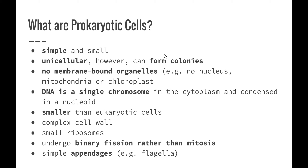They have a complex cell wall. They contain small ribosomes which, as we know, are able to undergo protein synthesis. The cells themselves undergo binary fission rather than mitosis — binary fission is a process of asexual reproduction where we produce two identical cells from one cell, but it's a slightly different process than mitosis. And our prokaryotic cells have simple appendages; in particular, a lot of prokaryotic cells have what we call the flagella, which is sort of like a tail which helps it to move around its environment.